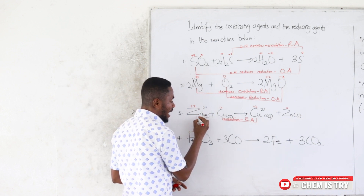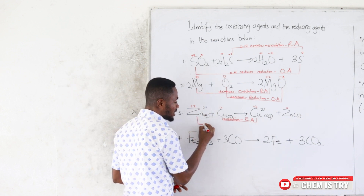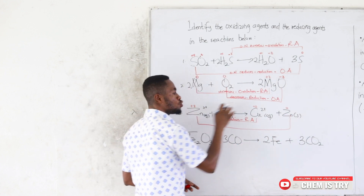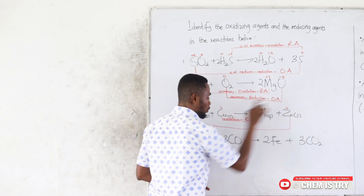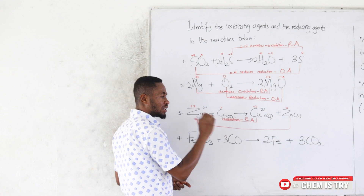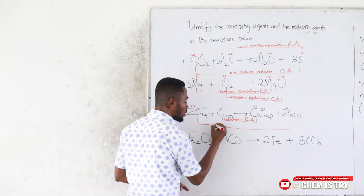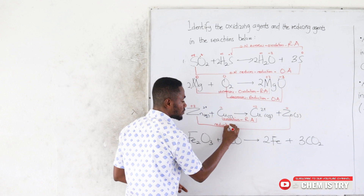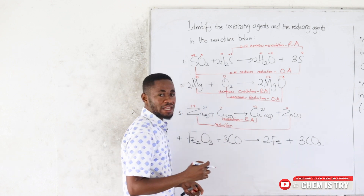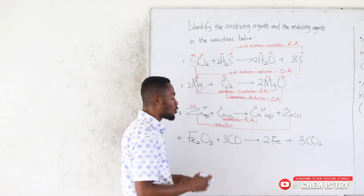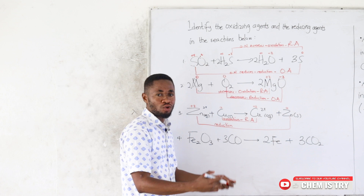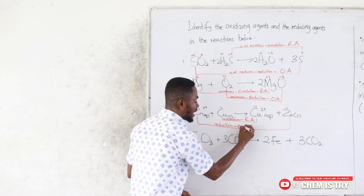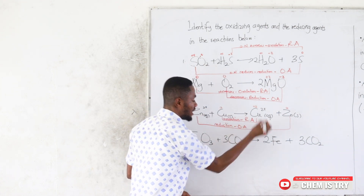Zinc goes from +2 to 0 — a decrease in oxidation number, which is reduction. The substance undergoing reduction is the oxidizing agent, so Zn²⁺ is the oxidizing agent in this reaction.